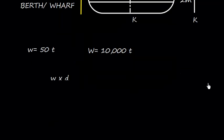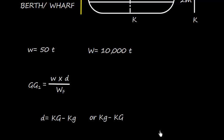Now the shift of center of gravity is given by this formula: GG1 equals W times D divided by WF, and here the D is KG of the ship and KG of the weight, or KG of the weight minus KG of the ship. Actually, this is the difference.